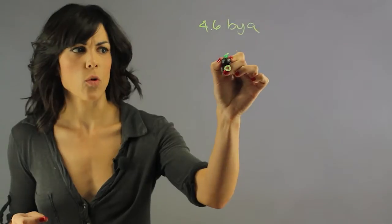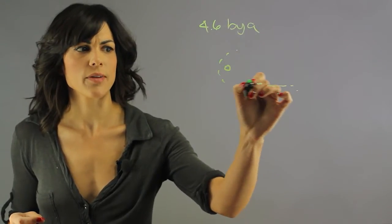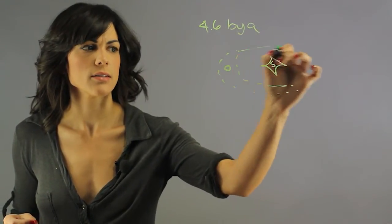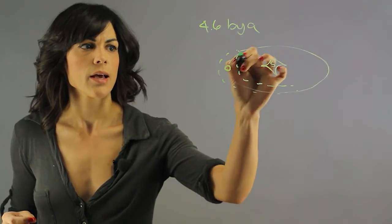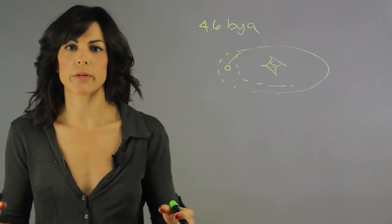Let's say that this is the Sun, this is the orbit. And as they sweep by it, they start cleaning the orbit and they start accreting mass.